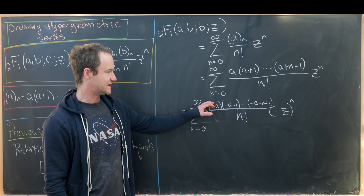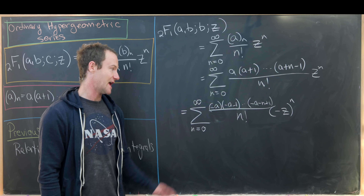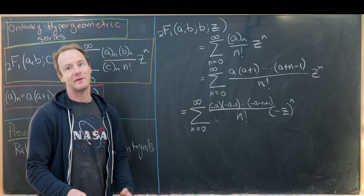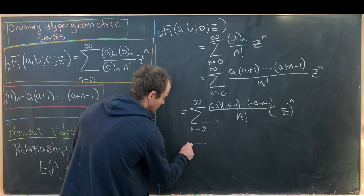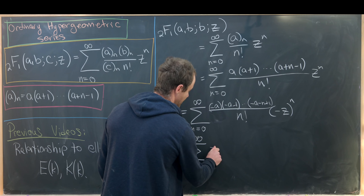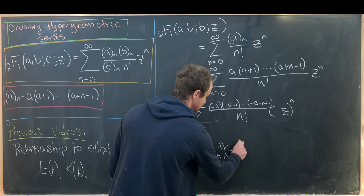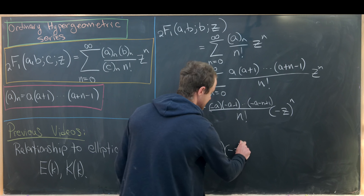The numerator is now a falling product of n terms starting at minus a, with n! in the denominator — that's exactly the binomial coefficient (-a choose n). So we have the sum from n=0 to infinity of (-a choose n) times (-z)^n. Recalling the binomial expansion formula, that's exactly (1-z)^(-a).